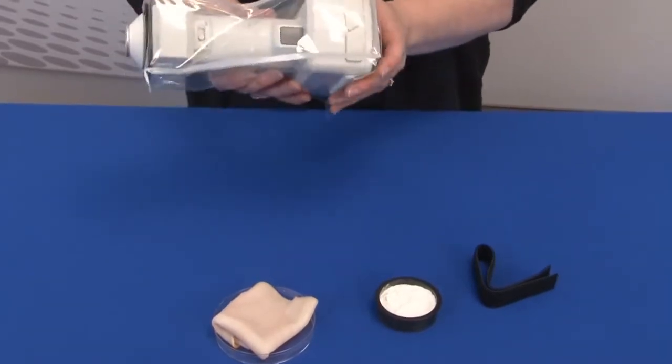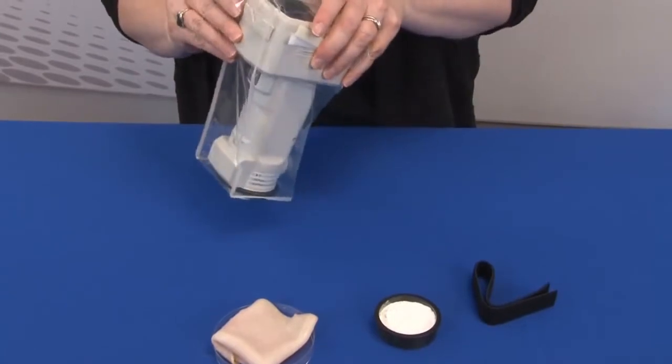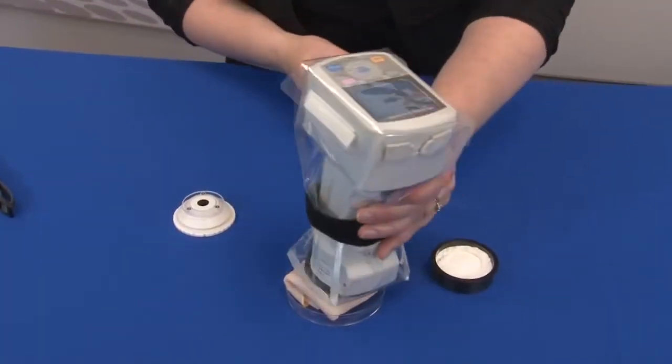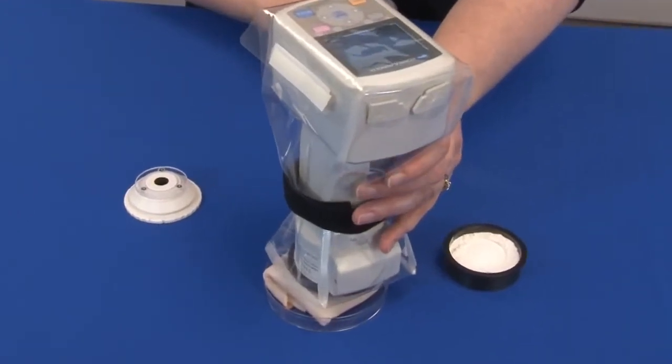After fastening around the instrument, the dust cover will protect foreign materials from getting inside the instrument. This will prevent inaccurate measurement readings and, if necessary, costly repairs.